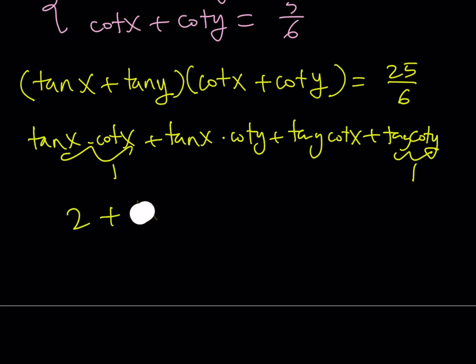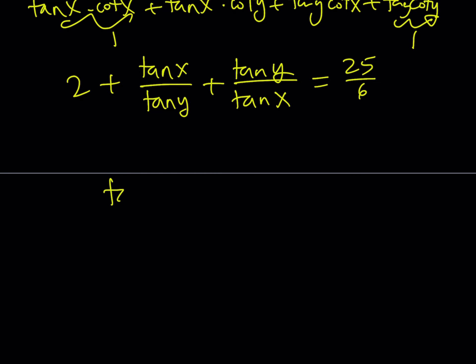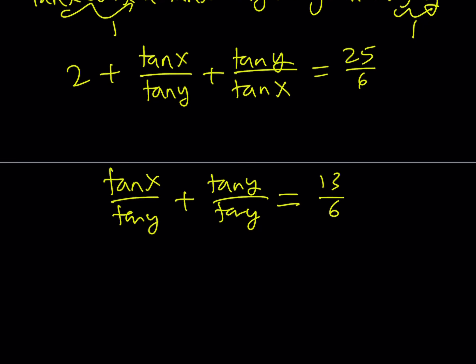At this point, I want to write the cotangent y as 1 over tangent y, so I can put my equation in this form: tangent x over tangent y plus tangent y over tangent x plus 1 plus 1, which is 2. And the whole thing equals 25 over 6. 2 is 12 over 6. If you subtract 2 from both sides, this is going to equal 13 over 6.